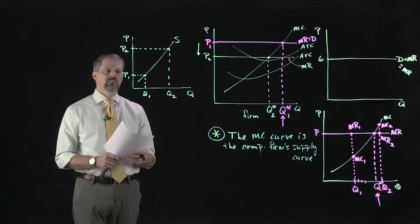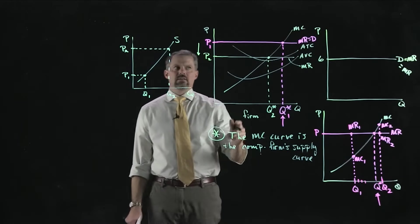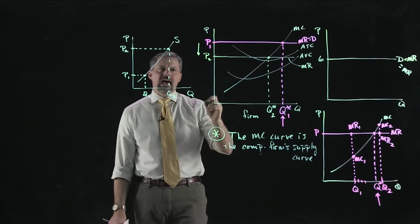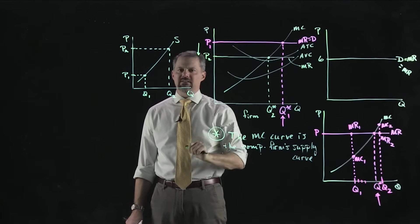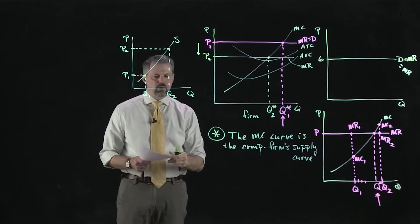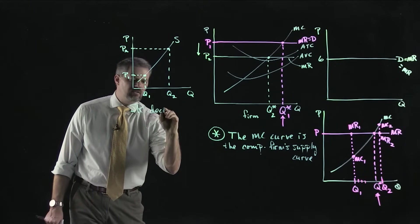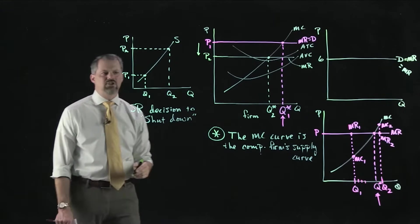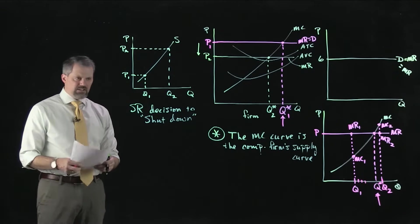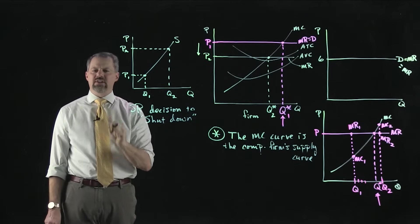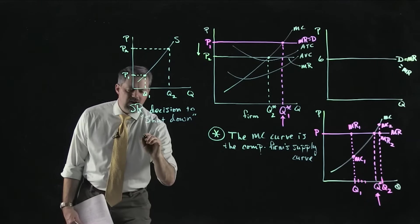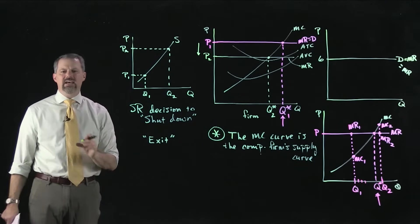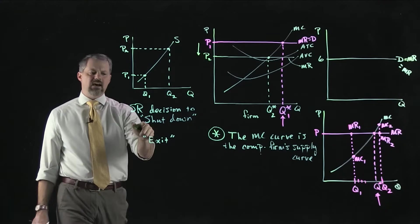Not all of the marginal cost curve is relevant. We want to think about how low the price can go and the firm still produces. Let's think about what we're going to call the short-run decision to shut down. Shut down is simply a short-run decision to not produce anything — that's different from the decision to exit a market, which is a long-run decision to leave the market permanently.